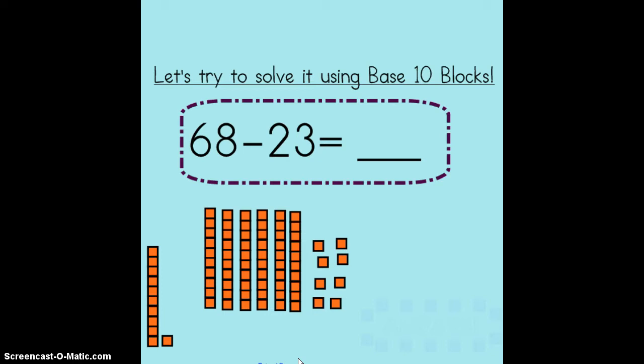When I subtract I don't have to build the second number. If I built 23 next I would be putting together a group of 68 and a group of 23. I don't need to build the number 23. I need to take 23 away.